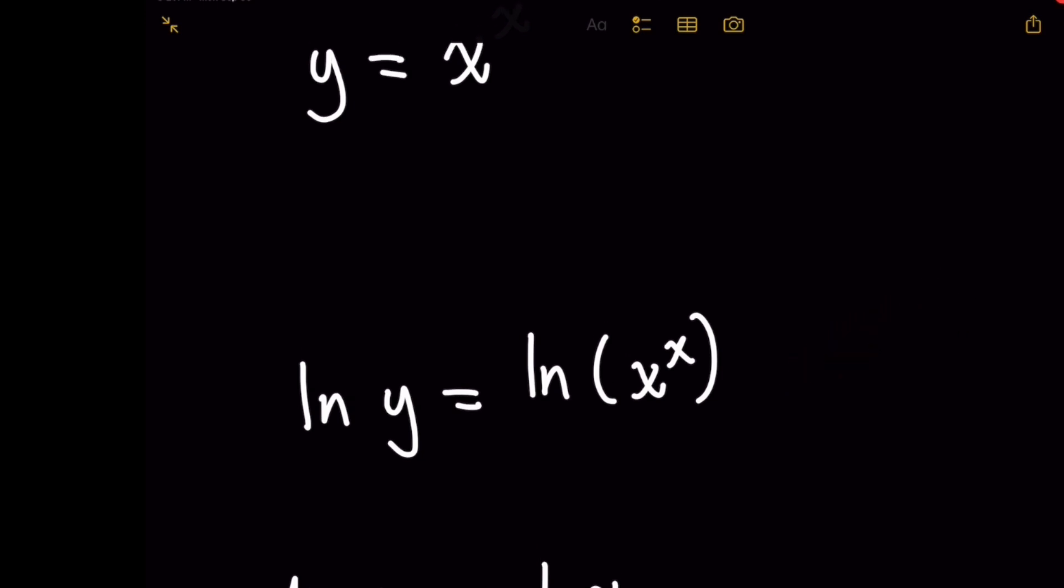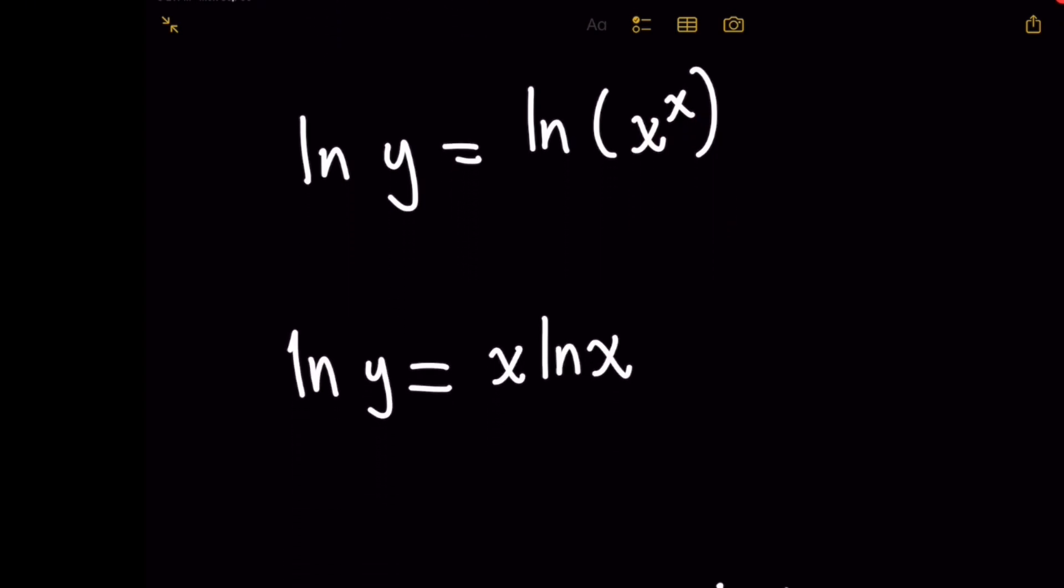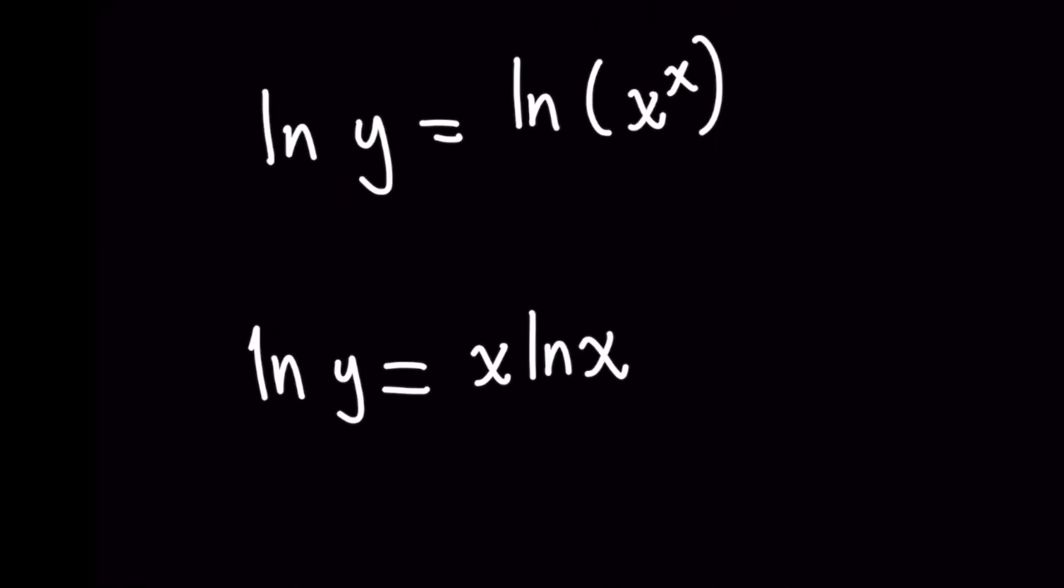What I want to first do is on the right-hand side, because we have the natural log of x to the x, I want to bring the x outside of the natural log because that's a special property of logarithms. And now we've got ln y = x ln x.